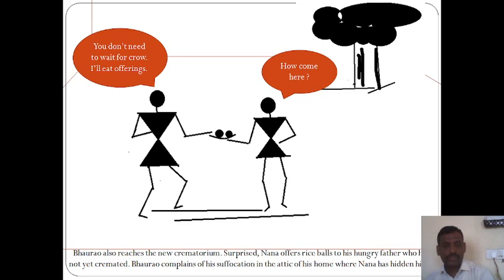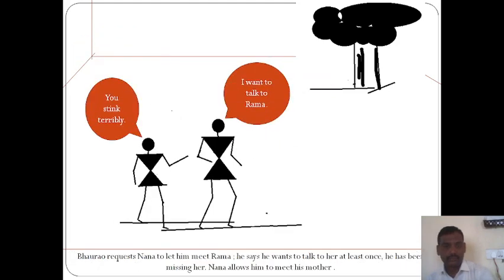Meanwhile, Baurav also reaches the new crematorium, and Nana is surprised to see him there. Nana offers rice balls to his hungry father, who has not yet been cremated. Nana asks, 'How come you are here?' Baurav says, 'You don't need to wait for the crow — I will eat the offerings.' Baurav complains of suffocation in the attic of his home where his body is kept and where Nana has hidden him. Baurav then requests Nana to let him meet Rama, saying he has been missing her.